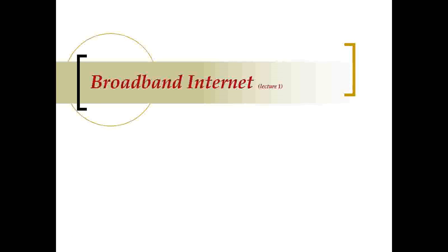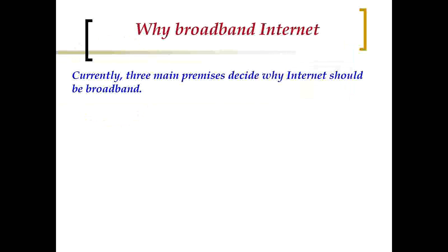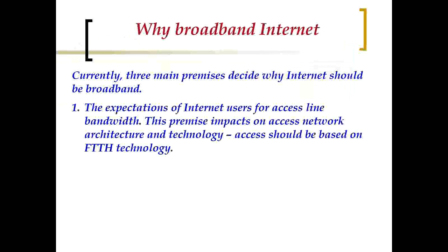Why do we think about broadband internet? Currently we have three main premises which decide why the internet should be broadband. The first expectation is that internet users want more and more bandwidth on their access line. This premise impacts access network architecture and the technology to be used. Access should be based on FTTH technology, which means fiber to the home.